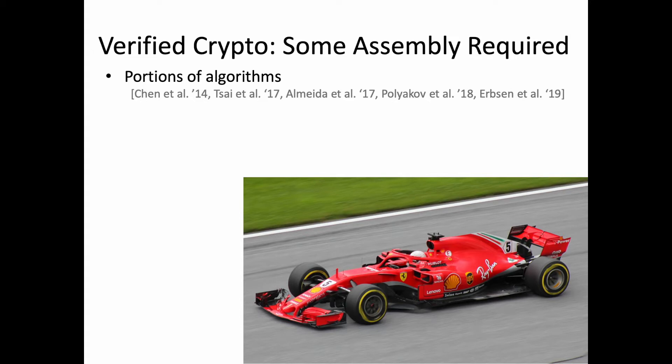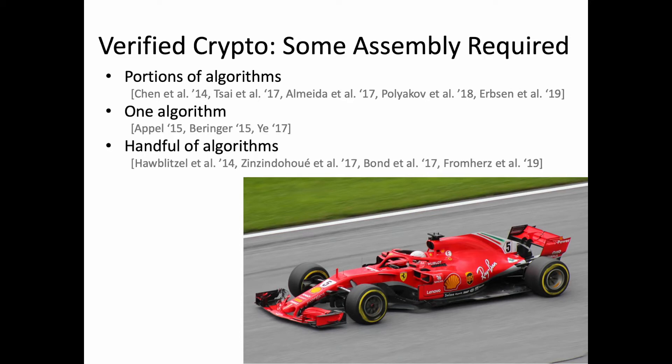For example, FiatCrypto gives you verified elliptic curves, but not their use in an actual cryptographic routine. Some work gives you one algorithm, like SHA-256, which is great unless you want SHA-224 or SHA-512. In some areas, you have lots and lots of choices — for example, elliptic curves — while in others you have almost none, for example, RSA.